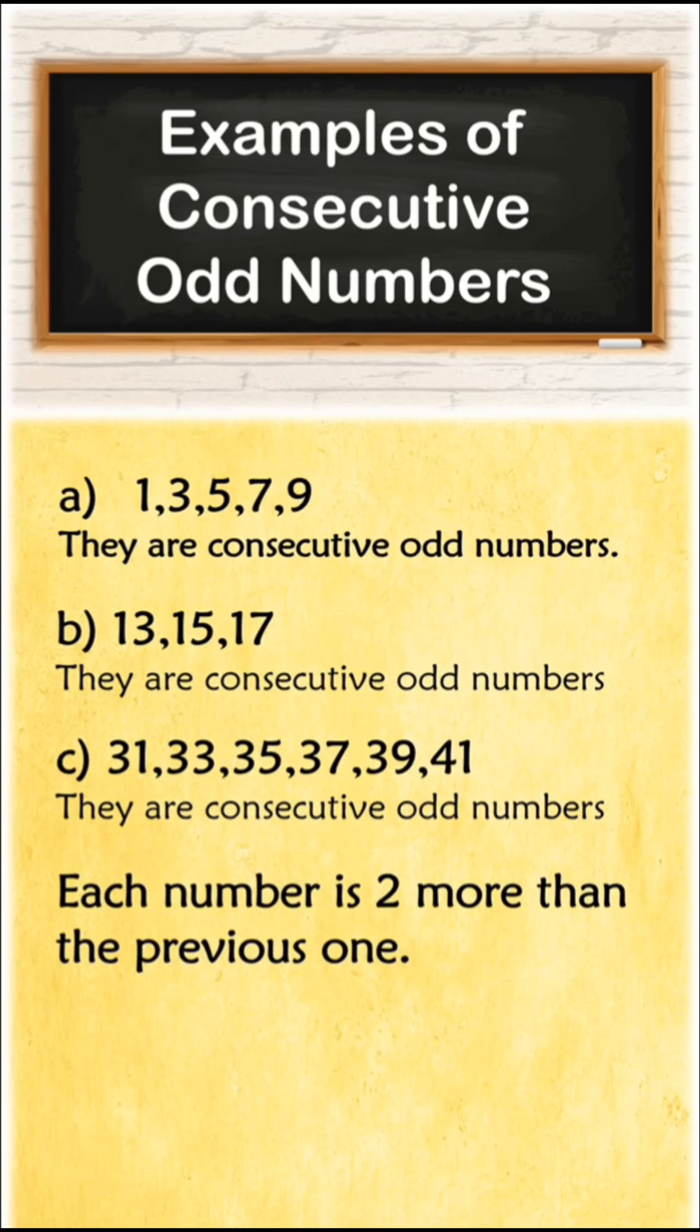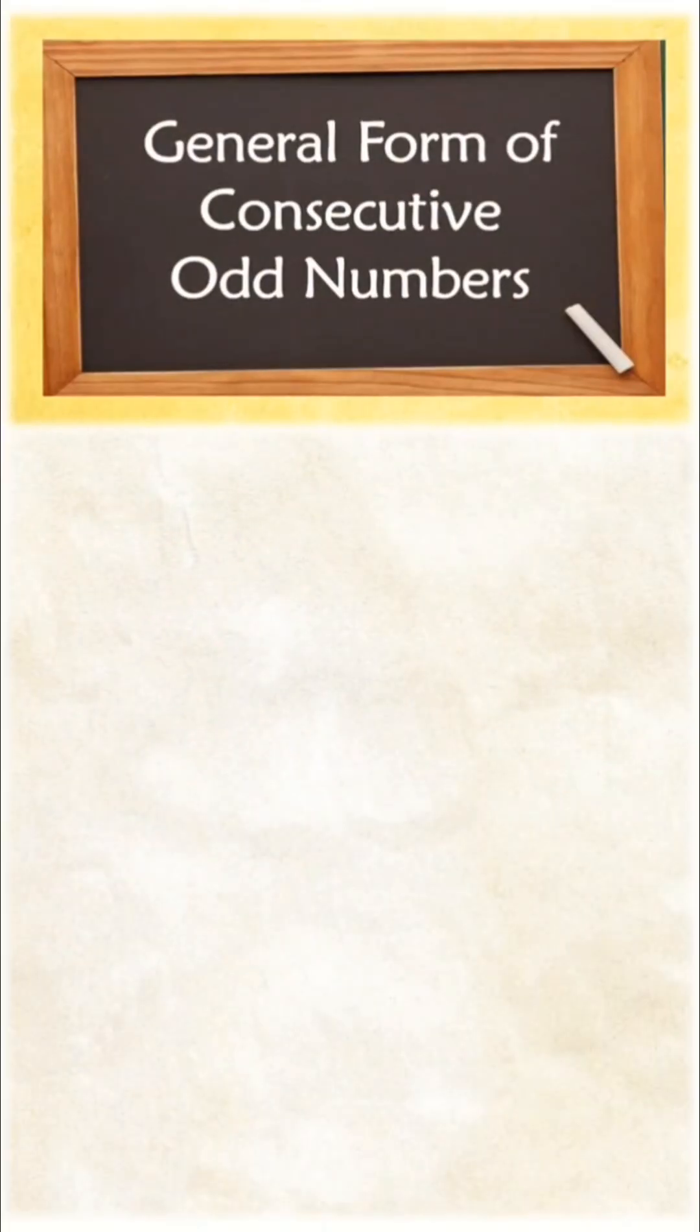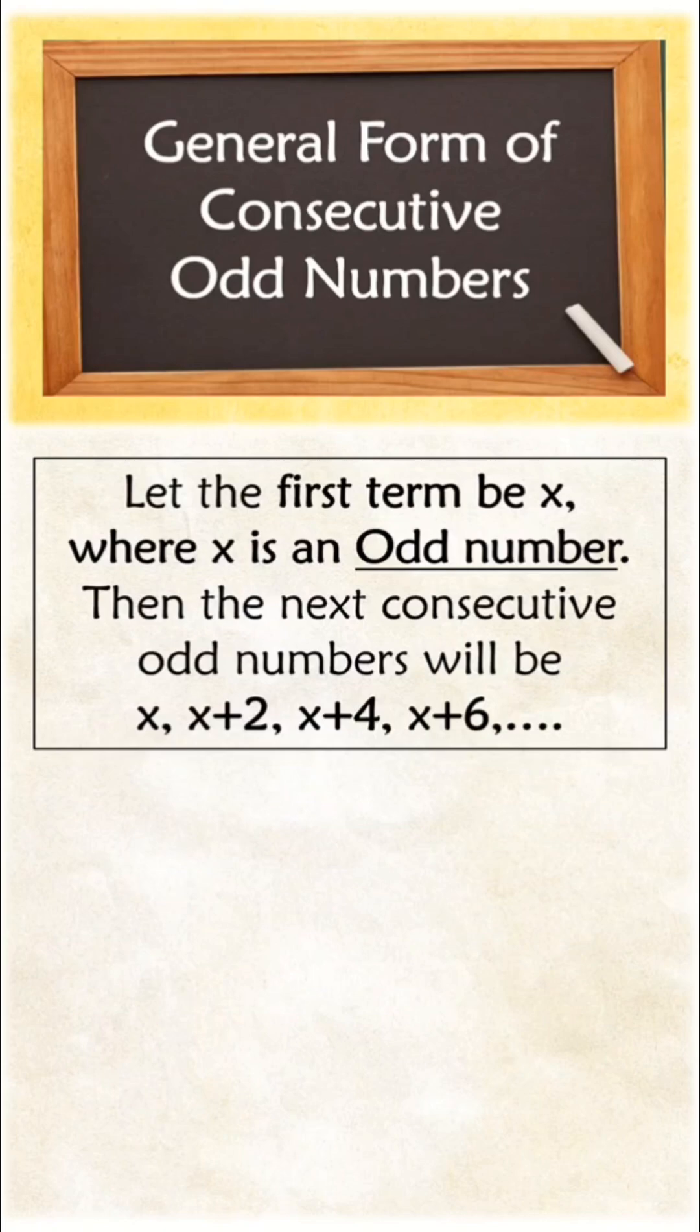Now let us see the general form of consecutive odd numbers. Let the first term be x, where x is an odd number. Then the next consecutive odd numbers will be x, x+2, x+4, x+6, and so on. The general form is the same for consecutive even and odd numbers.